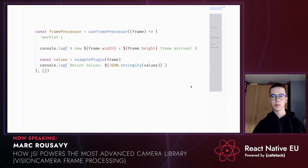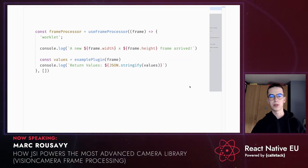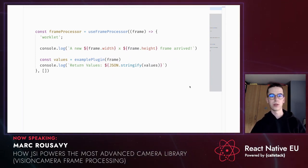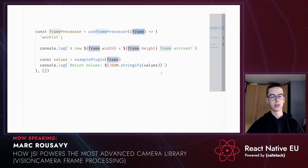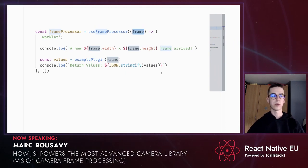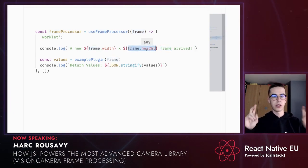Let's take another look at frame processors. Earlier, we saw that we can directly access a frame's width and height properties and even pass it to a native frame processor plugin, which is a host function. So how does this work? What exactly is the frame object? How does it contain the full 10-megabyte image from the camera? Isn't it really slow to copy frames from native to JavaScript for every frame the camera sees, which can happen up to 240 times a second?